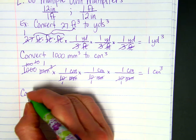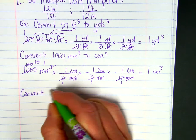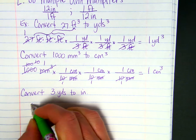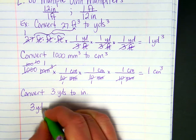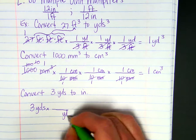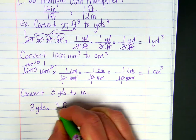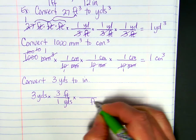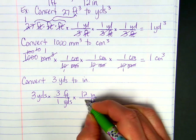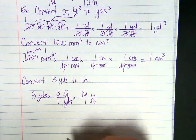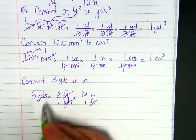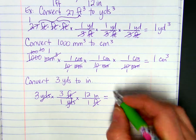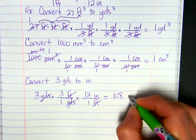And one more example, convert 3 yards to inches. We can use two unit multipliers. If we know that there are 3 feet in one yard, that changes it to feet, but then we're going to want to change the feet to inches. So we can cancel our label with yards, cancel the feet, and we just have to do 3 times 3 times 12. And 9 times 12 is 108 inches.